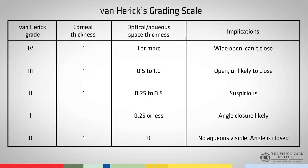In this case, we can see that the optical space is two times greater than the thickness of the cornea. Once we have this assessment, we can refer to the Van Herick grading scale. If the optical space had been between 0.5 and 1 times the thickness of the cornea, this would be assessed as grade 3. In our case, as it was two times the thickness of the cornea, it is classed as grade 4. In both instances, the probability of the angle closing is low.